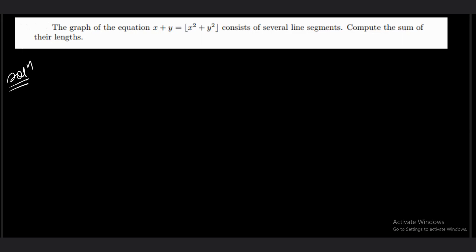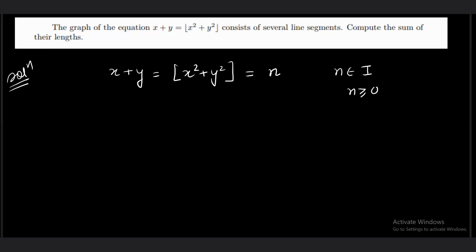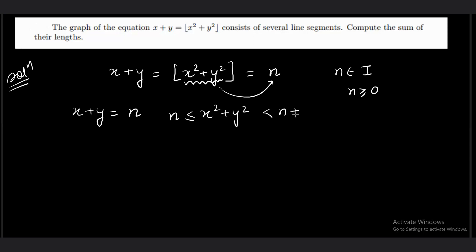How are we going to handle this question? The basic concept I will use is to write down the equation. Because the right-hand side is an integral part, I can assume that integer equals n, where n belongs to the integers. More specifically, n is not negative — n is greater than or equal to 0 — because the sum of two positive quantities cannot give a negative integral part. So x plus y equals n under the condition that x squared plus y squared is greater than or equal to n but less than n plus 1.